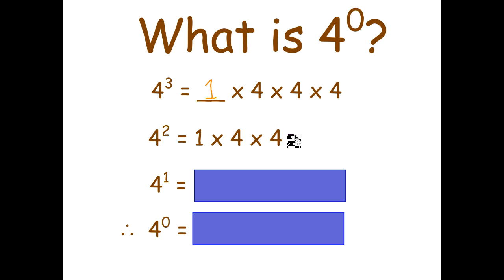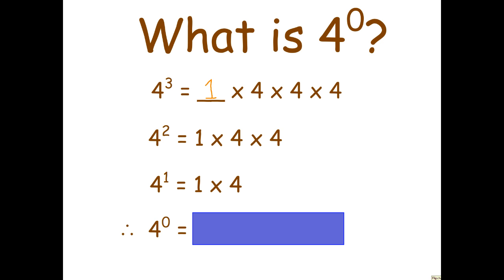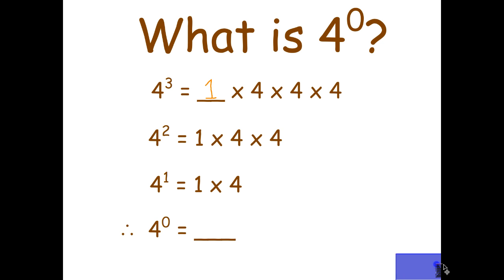Continuing the pattern, four to the power of one is one times four — one factor of four. Here's the key point: using that pattern, what do you think four to the zero is? Well, I need to write it with zero fours, and therefore it must be true that four to the zero equals one. The answer to the question 'what is four to the zero?' is one, because that's consistent with all the other mathematics we've learned so far.